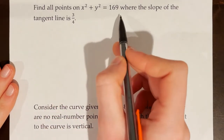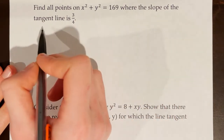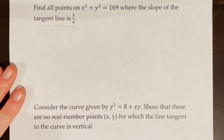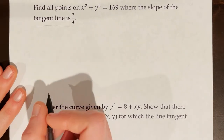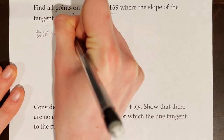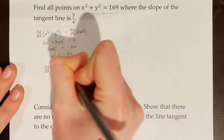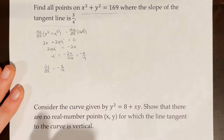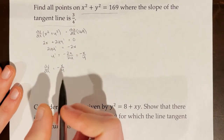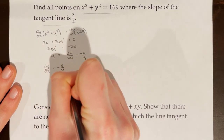Find all points on the graph where the slope of the tangent line is 3/4. We're not looking for horizontal or vertical tangent lines here, but we follow largely the same process. The first step is to take the derivative of the implicit equation, giving dy/dx = -x/y.